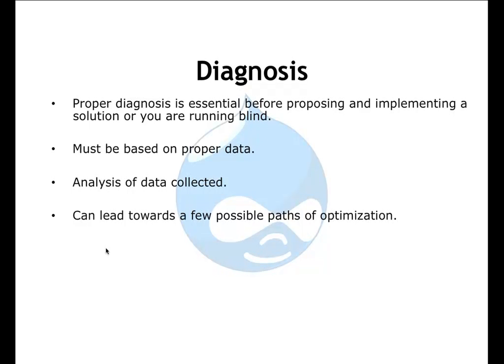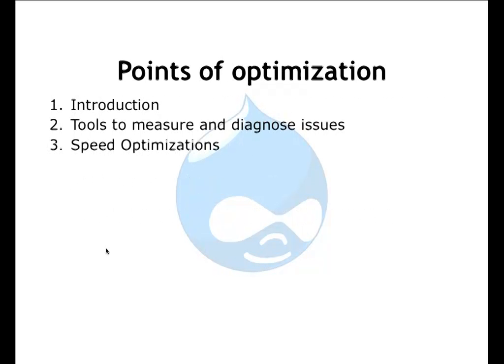You want to base this on proper data. Once you have that kind of data, you can analyze it and really narrow down the scope of what you're trying to optimize — so you can rule out something like optimizing your Apache server. We'll be looking at some tools to measure and diagnose these issues and some of the speed optimizations you can provide.